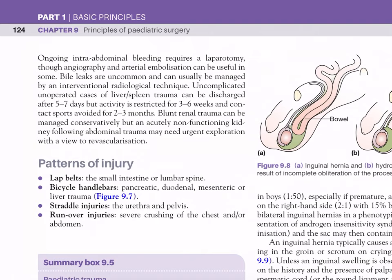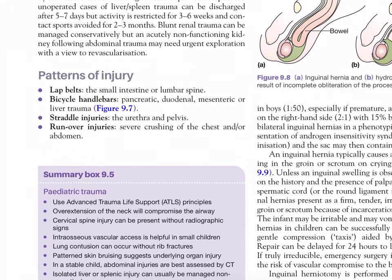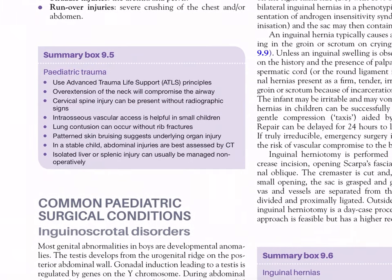Blunt renal trauma can be managed conservatively, but an acutely non-functioning kidney following abdominal trauma may need urgent exploration with a view to revascularization. Patterns of injury: lap belts — small intestine or lumbar spine; bicycle handlebars — pancreatic, duodenal, mesenteric or liver trauma; straddle injuries — the urethra and pelvis; run-over injuries — severe crushing of the chest and/or abdomen. Summary Box 9.5 — Paediatric trauma: use ATLS principles; overextension of the neck will compromise the airway; cervical spinal injury can be present without radiographic signs; intraosseous vascular access is helpful in small children; lung contusion can occur without rib fractures; pattern skin bruising suggests underlying organ injury; in the stable patient, abdominal injuries are assessed by CT; isolated liver or splenic injury can usually be managed non-operatively.